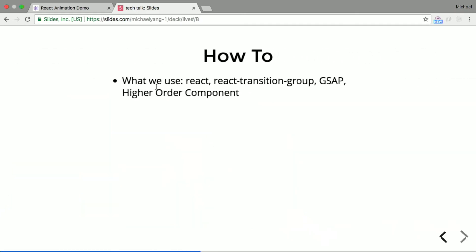So what do we use? Of course, we use React. We also use React Transition Group — it's like a bridge to connect React and the GSAP library. And we use GSAP. We also mention a higher-order component at the end, though it's not required.